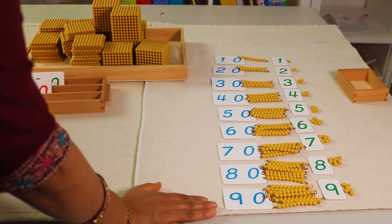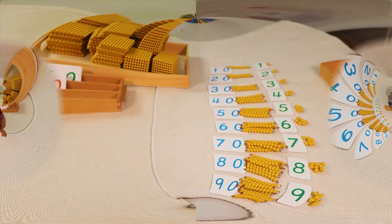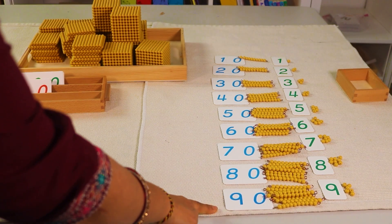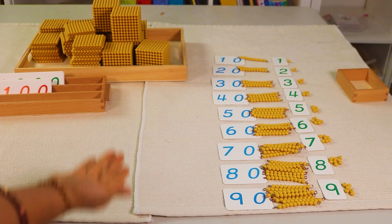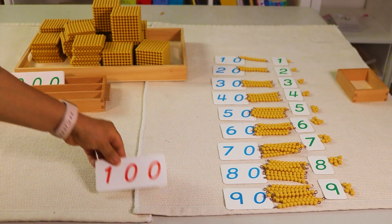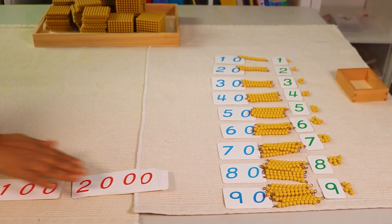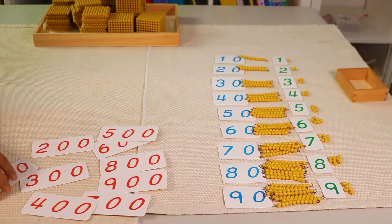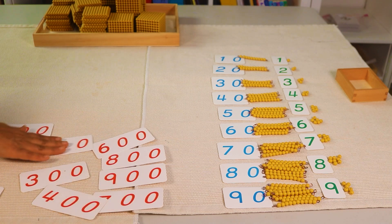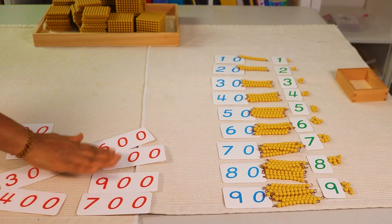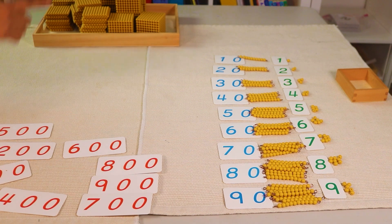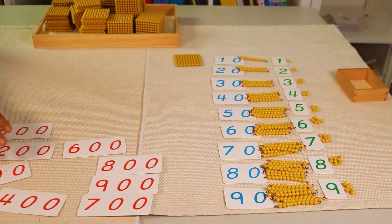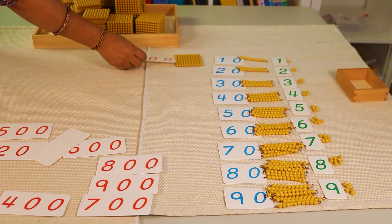What comes after ninety? Your child will say one hundred. That will go in the next column. You can ask your child what comes after ninety. Then your child will answer one hundred. Then you have to start from the new column. Now let's take the hundred. So this is the hundred card. Now we are going to place them. This is one hundred, so you can ask your child where is one hundred. This is one hundred.